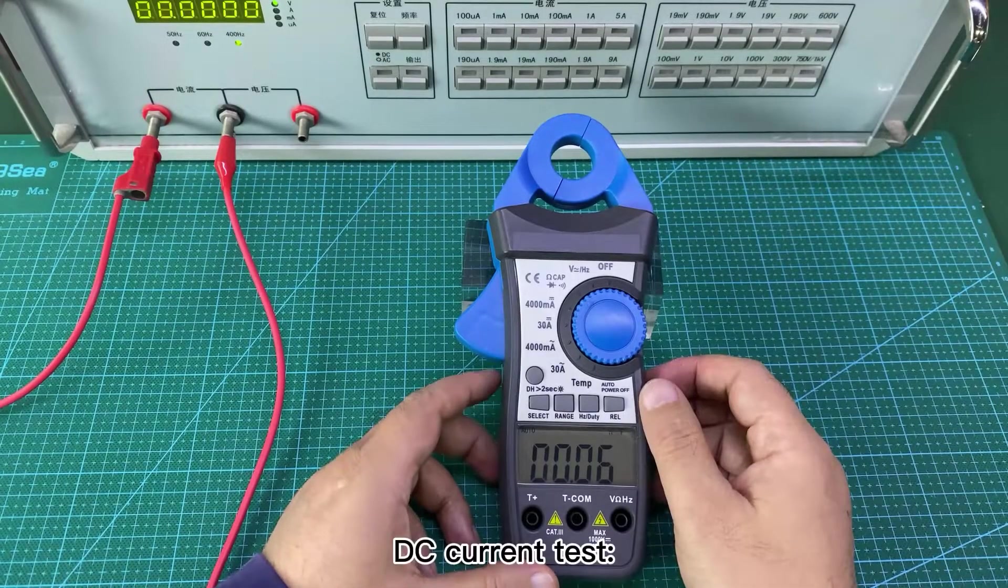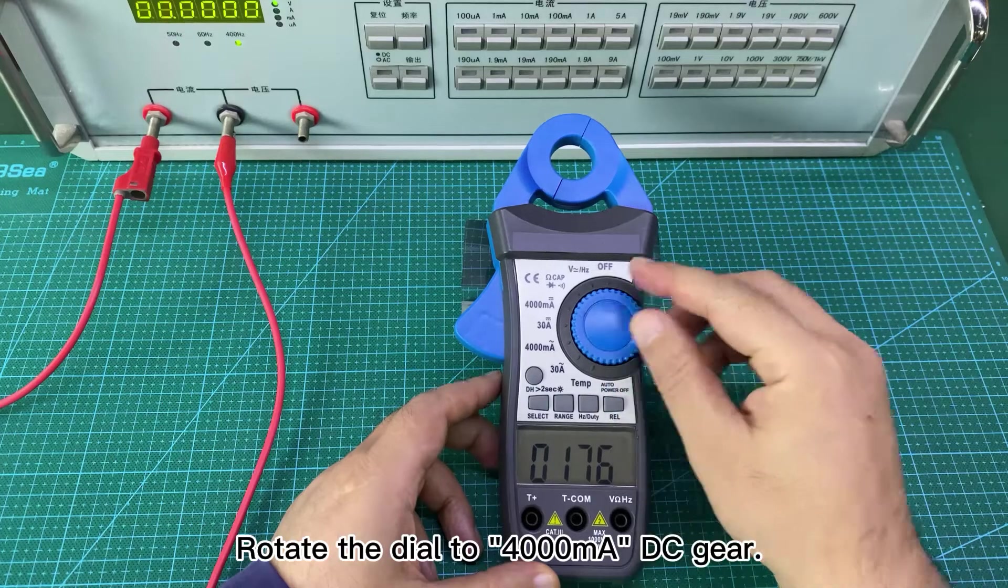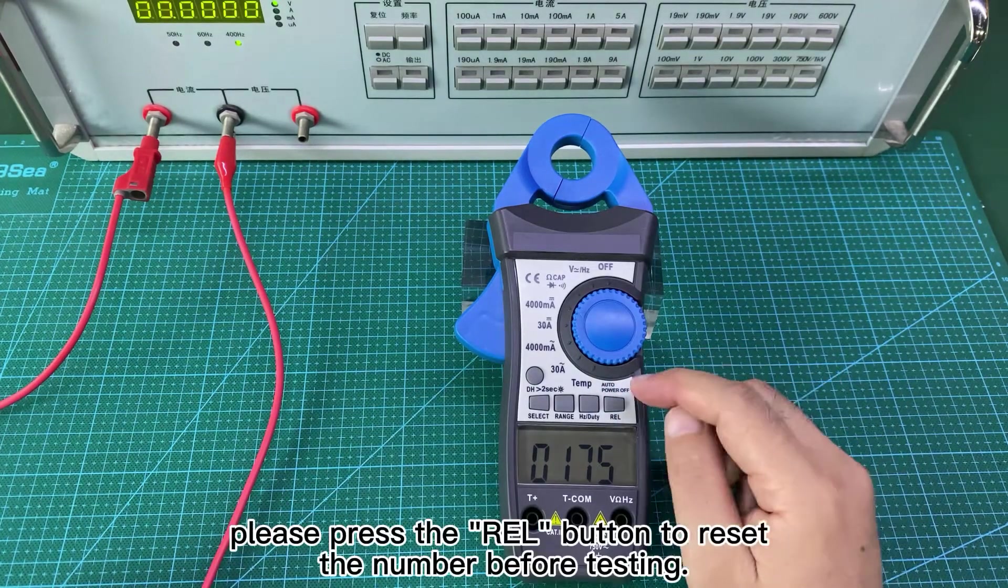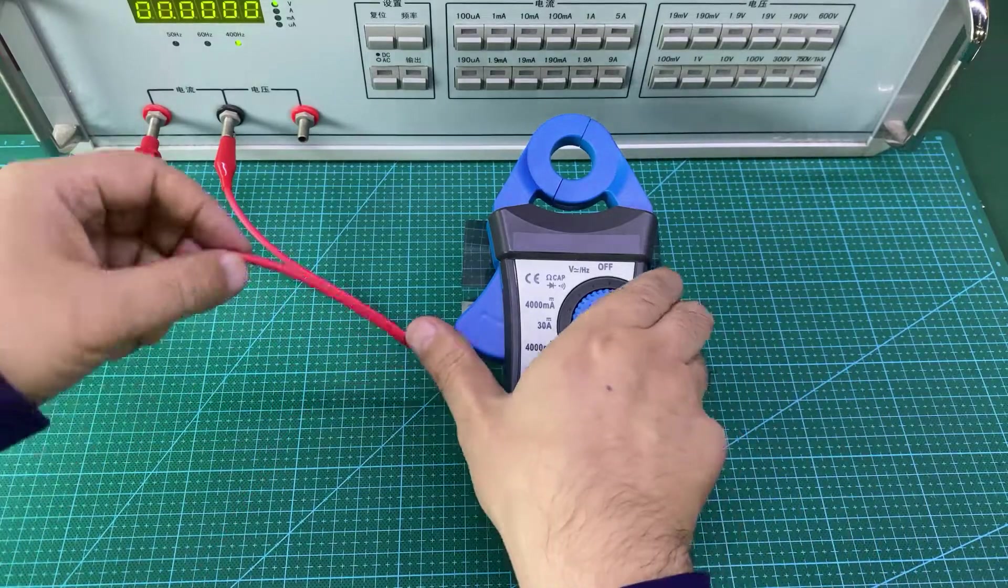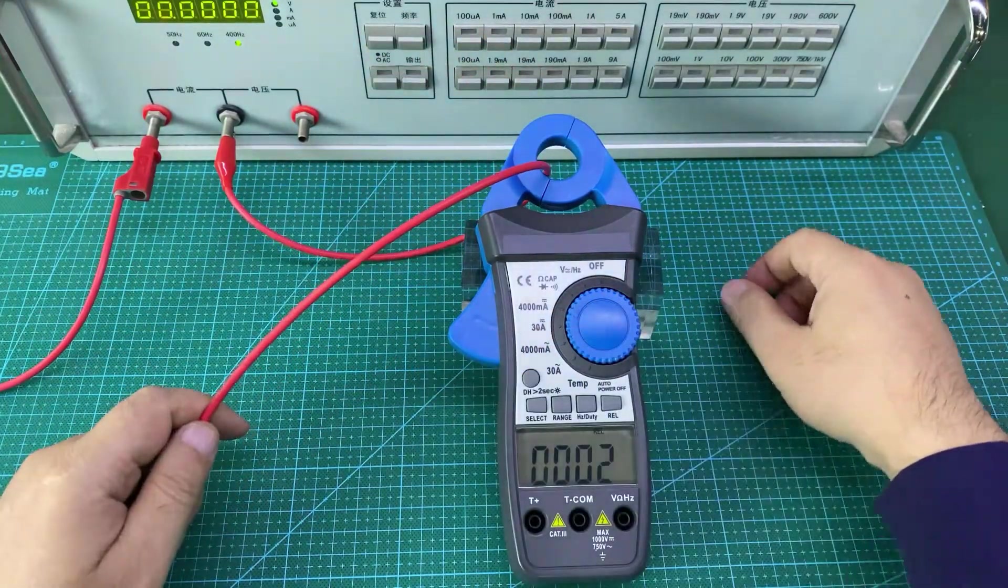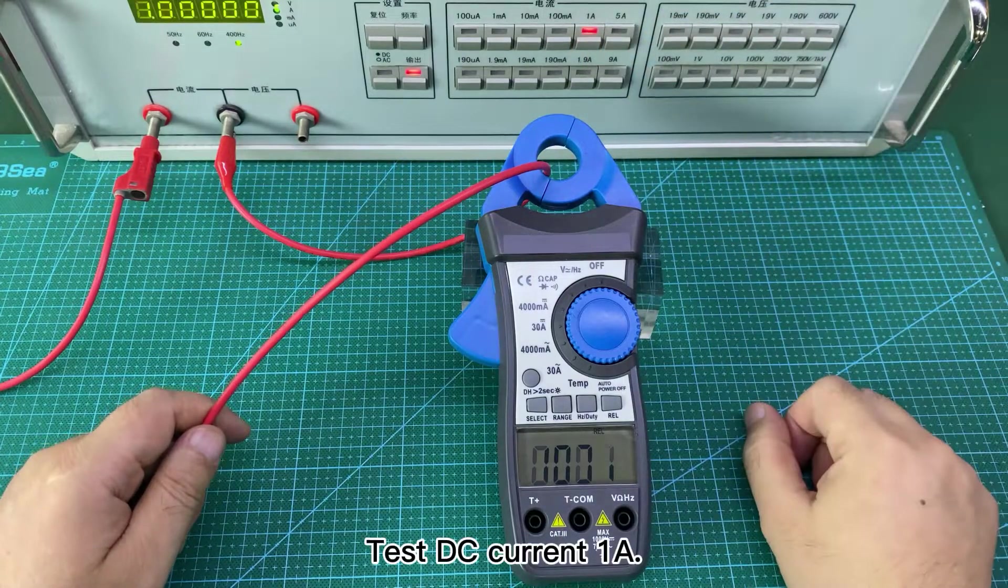DC current test. Rotate the dial to 4000 mA DC gear. Please press the REL button to reset the number before testing. Test DC current 1A.